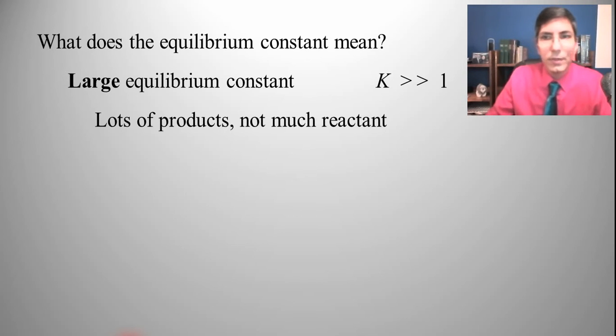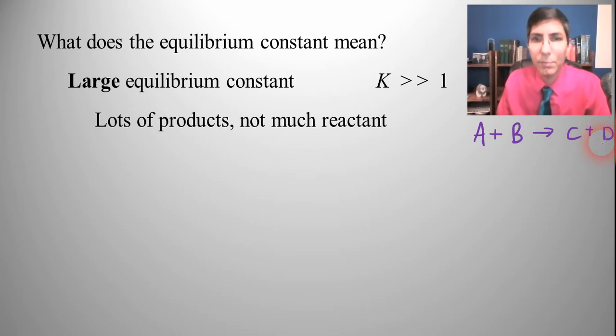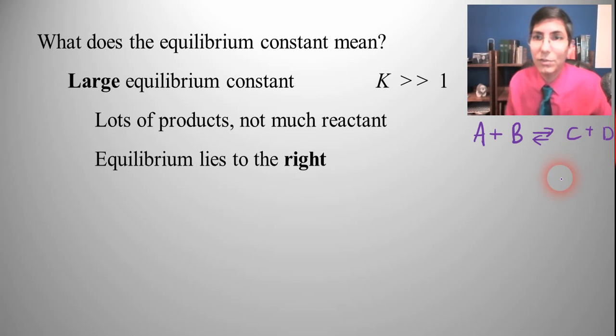So in our example equation let's just say we have A plus B yields C plus D. Well if that's the reaction, and of course if it's an equilibrium it would have to be a double headed arrow there. Well what that means is if it's a large equilibrium constant you'll have a lot of C and D but you're not going to have very much reactant A and B left over. And because we have a lot of C and D and we generally write the products on the right side of the arrow we say that the equilibrium lies to the right.